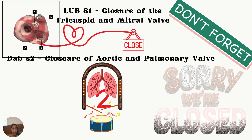For heart sounds, dub is easier for me to remember, so I use it as my anchor — dub is S2. I think of drumming at a club and screaming 'woo!' The dub sound is the closure of the aortic and pulmonary valves. The lub sound is the closure of the mitral and tricuspid valves — the opposite valves. Don't forget that on the exam.